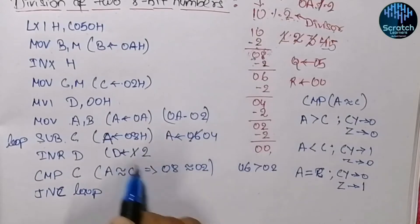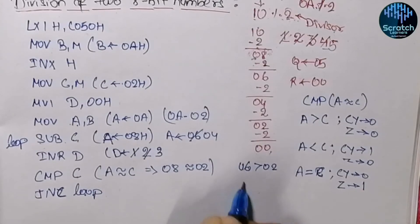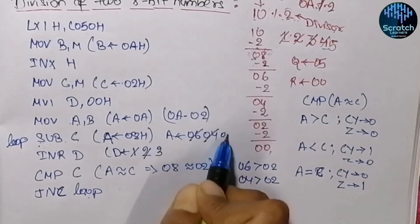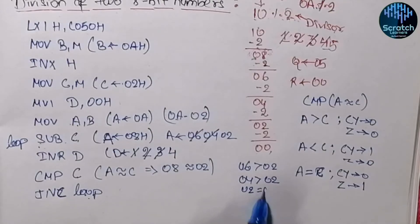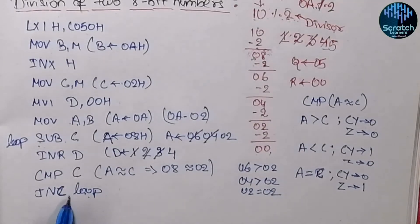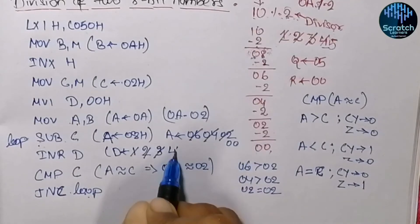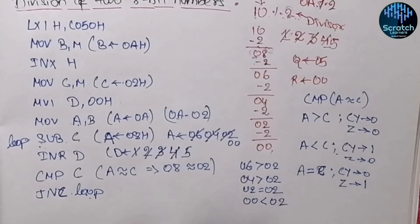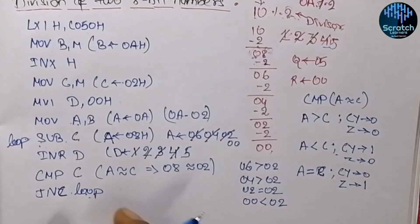04 is compared with 02 — 04 is greater, so we jump and subtract to get 02 hex, quotient increments to 4. Then 02 equals 02, so no carry is generated and the loop executes once more: remainder becomes 00 hex and quotient increments to 5. Now comparing 00 with 02 — 00 is less than 02 — so a carry is generated. When carry is generated, the JNC loop is not executed further and we proceed to the next statements.